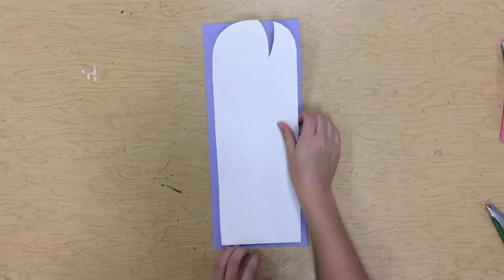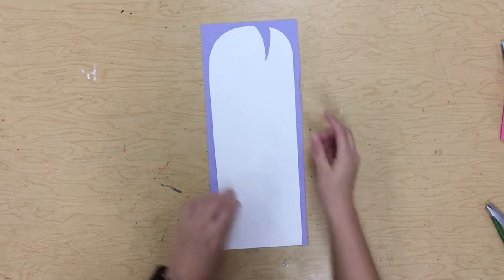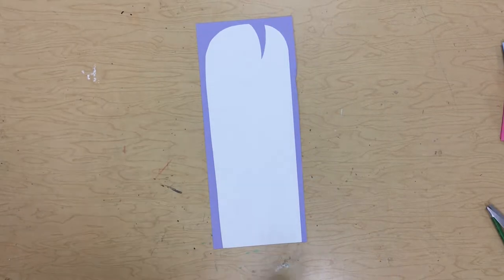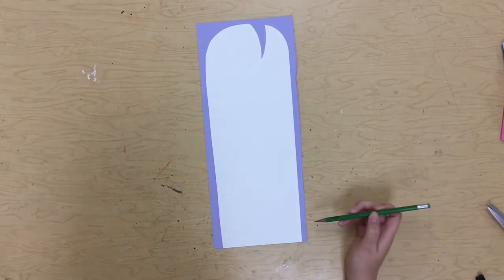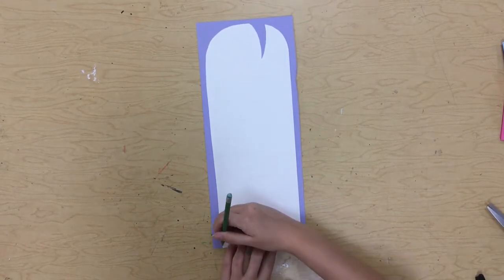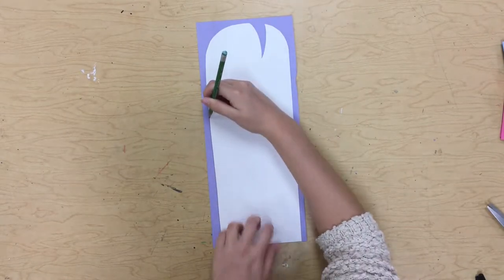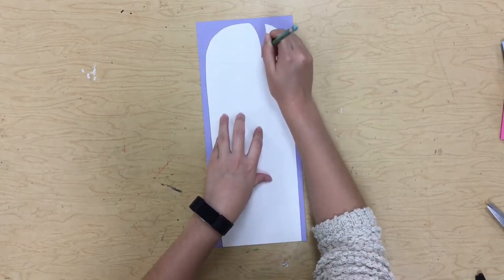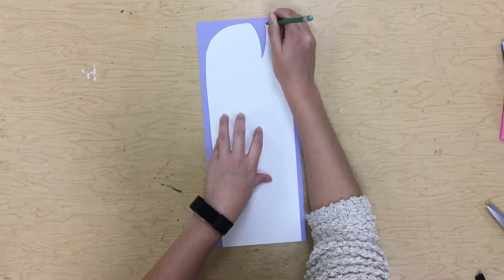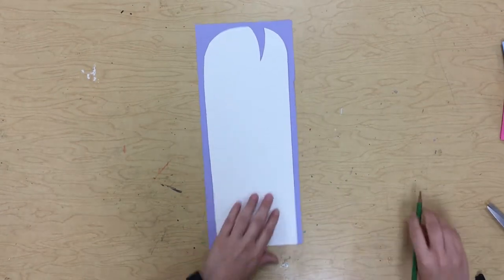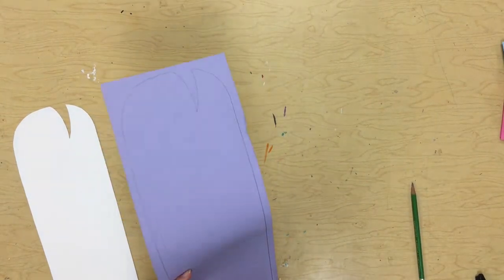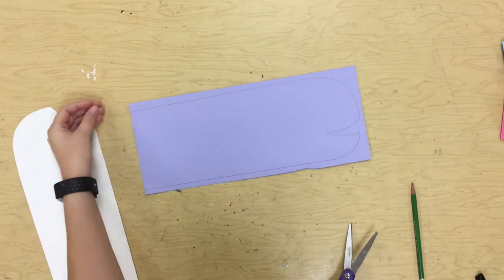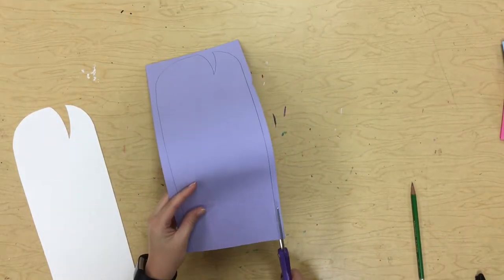Each table will have a stencil on their table. You're going to get your pencil, and you will trace around that stencil. Once you've traced your stencil, then you can cut on that line that you just drew with your scissors.